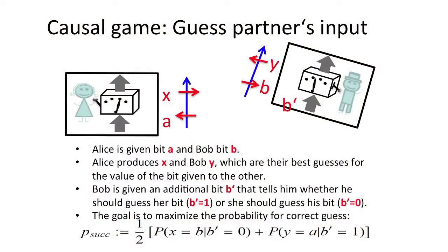The example is best explained in terms of a causal game. The causal game is a game where you should guess your partner's input. You have two partners. Alice is given a bit A and Bob is given a bit B. Alice should produce X and Bob Y, which are their best guesses for the value of the bit given to the other. So you have to guess the partner's input. There is an additional bit B' which is given to Bob that tells him whether he should guess her bit, for B' equal to 1, or she should guess his bit, for B' equal to 0. They have to maximize the cost function which is the probability for the correct guess.